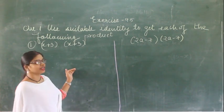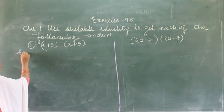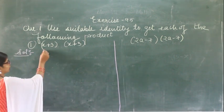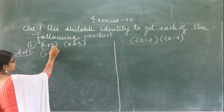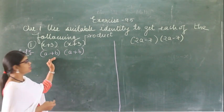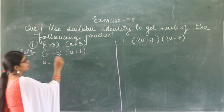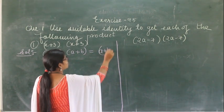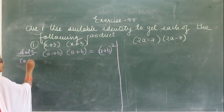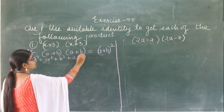In the first question, it is given: x plus 3 into x plus 3. You have to check and find out which identity we are going to use for this expression. As you can see, I can write this as (a plus b) and (a plus b). If I write it in this form, then the formula is (a plus b) whole square. And what is the formula for (a plus b) whole square?